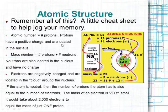On this slide we'll begin talking about atomic structure — this should be your review. The atomic number is equal to the number of protons located inside the nucleus, and protons are positive. The mass number is typically a whole number representing the number of protons plus neutrons added together. So if you're given the mass number and the atomic number, you can figure out the number of neutrons by simply subtracting.